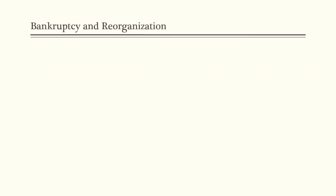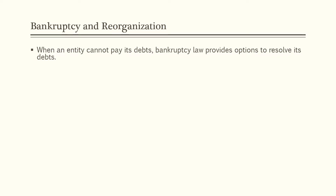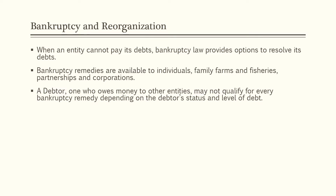This part of the lesson will explain bankruptcy law and its goals, an overview of the Bankruptcy Code, and the specific types of relief available under the Code. We will begin with bankruptcy and reorganization generally. When an entity cannot pay its debts, bankruptcy law provides options to resolve its debts. Bankruptcy remedies are available to individuals, family farms and fisheries, partnerships, and corporations. A debtor — one who owes money to other entities — may not qualify for every bankruptcy remedy, depending on the debtor's status and the level of their debt.